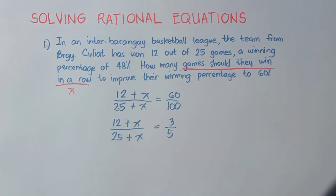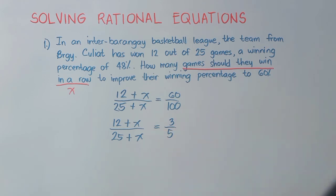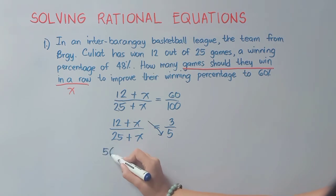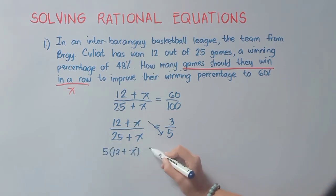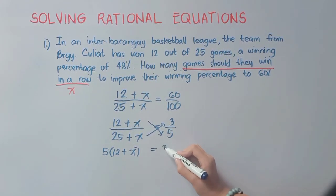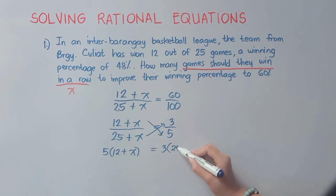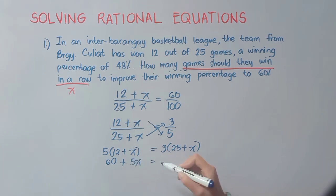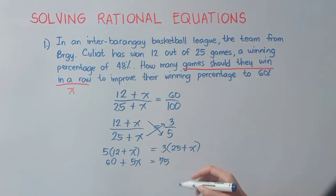So we have (12 + x)/(25 + x) = 60/100. Since 60 and 100 can be simplified — common factor is 20 — we get 60/20 = 3 and 100/20 = 5. Since there is one rational expression on each side, we can cross multiply: 5 × (12 + x) = 3 × (25 + x).